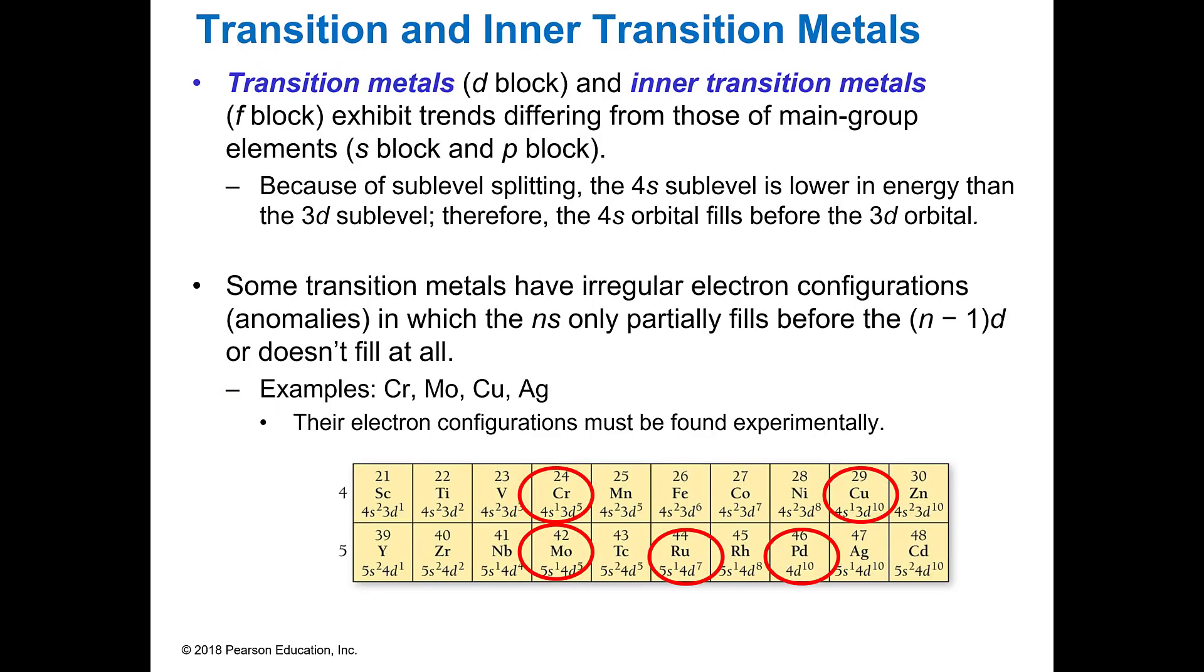I want to mention about transition and inner transition metals. When I first told you about the periodic table, I mentioned that they don't follow all of our rules. And even with the configuration, they don't follow all of our rules. Some of them have irregular electron configurations because they don't fill all the way. And this is because some of them have what we call a hybrid orbital. Most often what they'll do is they'll only partially fill the S with one electron and then jump to the D.